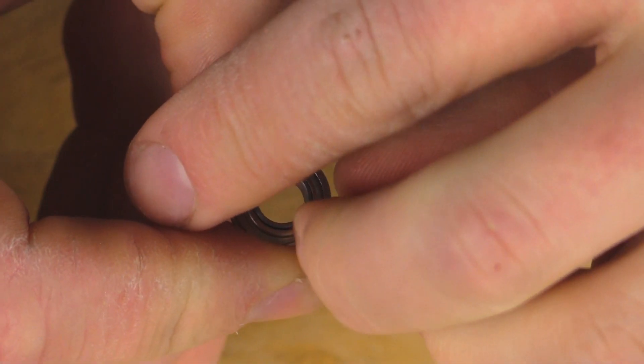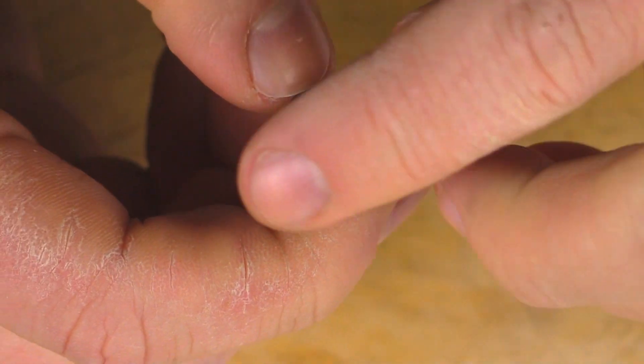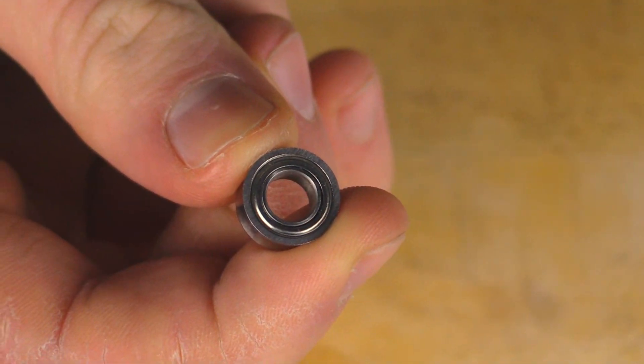So you see the c-clip just popped out right there. Some bearings are harder to remove the c-clips than others, but if you give it a good try you'll get it eventually. So you just want to turn the bearing over, bang it on the table a couple of times and the bearing shield is gonna fall right out.